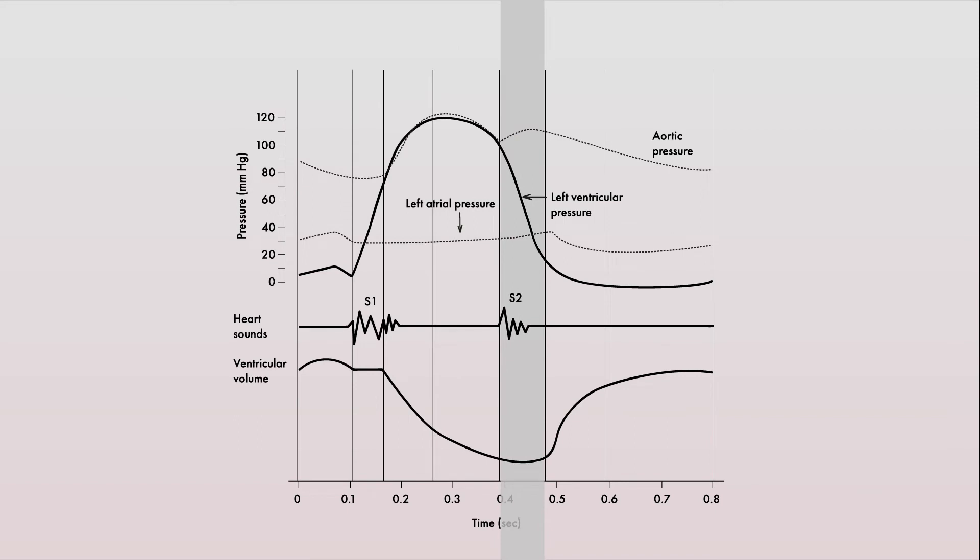The point in time after the systolic ejection phase is where the aortic valve closes and where it produces the S2 heart sound. This marks the end of systole and the beginning of diastole.